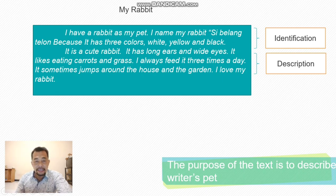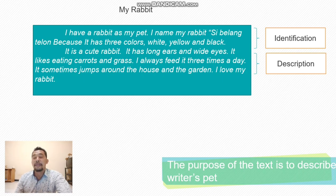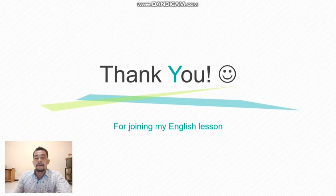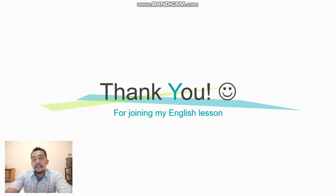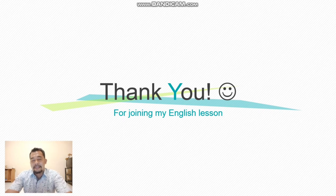To recap: descriptive text is a text that describes a person, animal, thing, or place specifically. We covered the definition, generic structure (identification and description), language features (simple present, adjective, noun phrase), the purpose, and two examples. I think that's all for today's lesson. Thank you very much for joining. Hopefully you understand the lesson. Thank you.